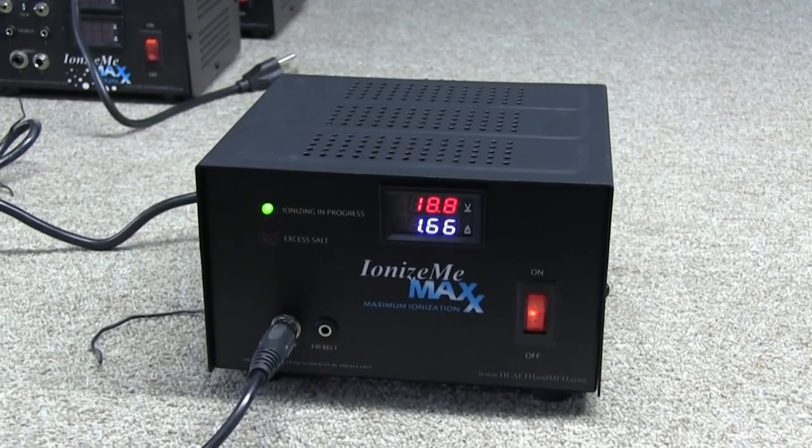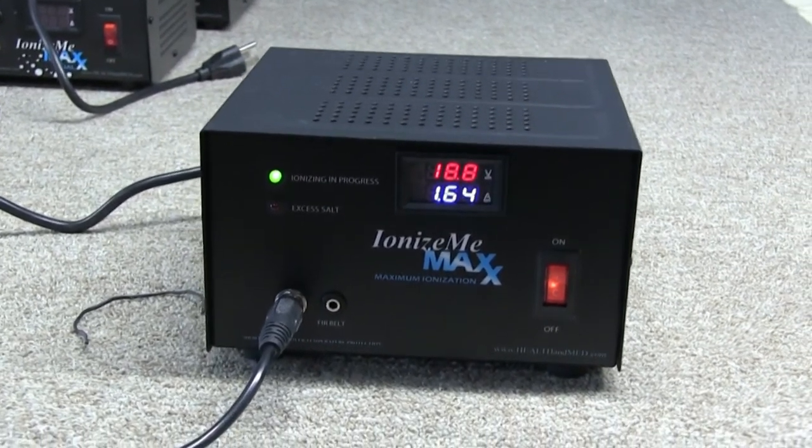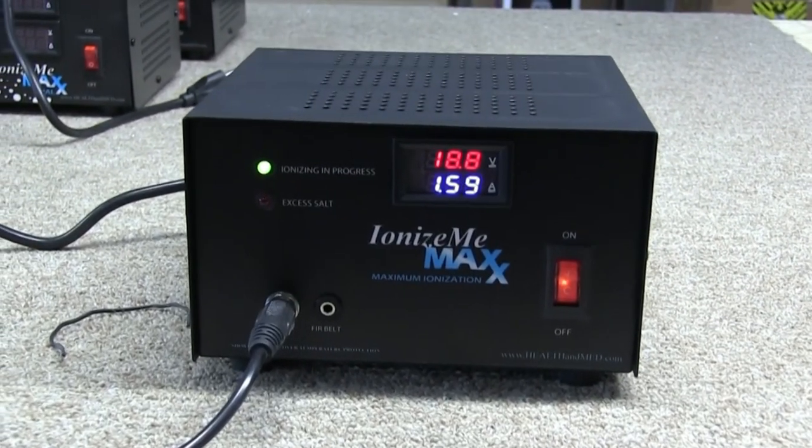Two of our models, the Ionismy Max and the Ionismy Max Dual, have a voltage display. And as you can see, the voltage is a true display as it is fluctuating and remains near 18 to 20 volts at all times.